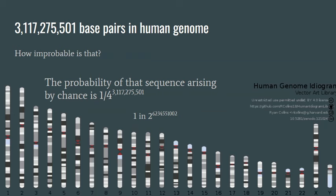Well, the probability of the sequence arising by chance is 1 upon 4 to the power of 3,117,275,501. And since there are 4 base pairs, that is one chance in 2 to the 6,234,551,002.